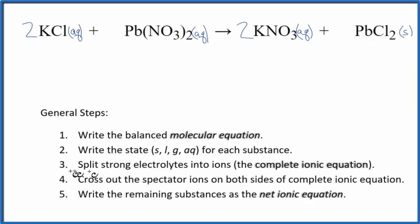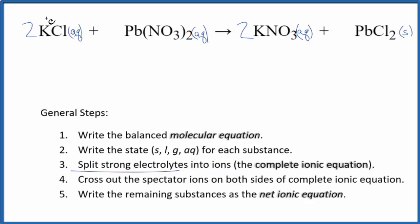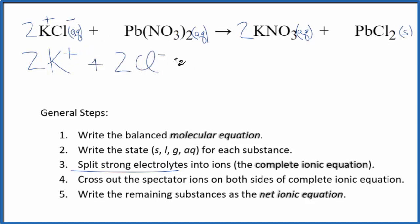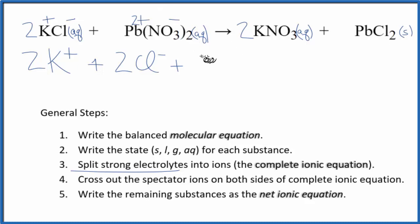We have our states. Now I can split the strong electrolytes into ions for the complete ionic equation. Potassium is in group 1, and chlorine is always 1 minus. So we have 2 K⁺ — that's two potassium ions, aqueous — plus two chloride ions. We can't tell the charge on lead just by looking at it; we have to look at what it's bonded to, since it's a transition metal. Nitrates are always 1 minus, and I have two of them. So lead's got to be 2 plus — this is the lead 2 ion, Pb²⁺ — and then we have two nitrate ions.